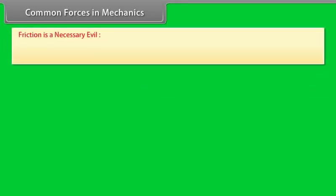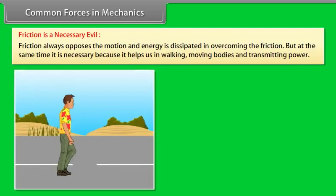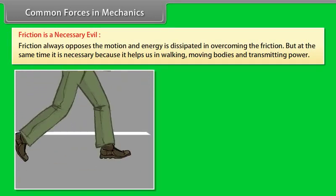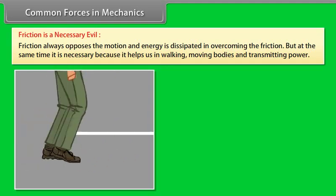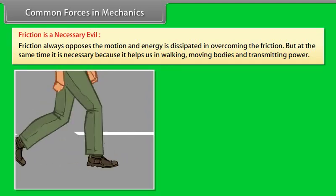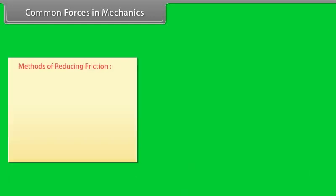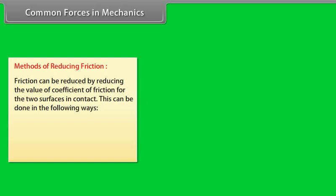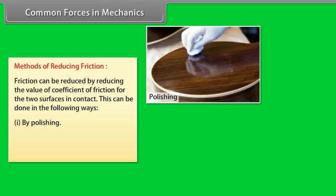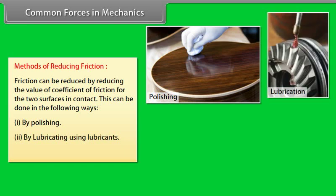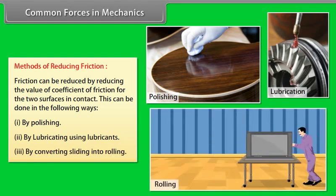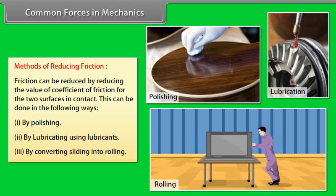Friction is a necessary evil. It always opposes motion and energy is dissipated in overcoming it, but it is necessary because it helps us in walking, moving bodies, and transmitting power. Friction can be reduced by: (1) polishing, (2) lubricating using lubricants, and (3) converting sliding into rolling.